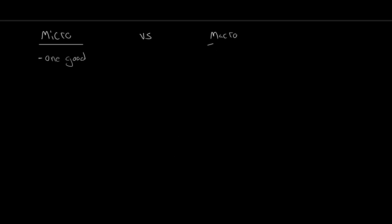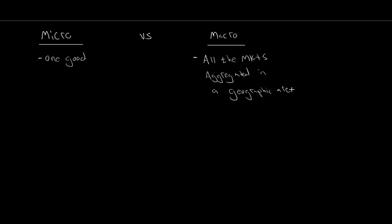Jumping over to macro — what's our distinction? For macro, what we are looking at is all the markets, aggregated in a geographic area. Typically, that geographic area is a nation state. We might be looking at the macroeconomic outcome in Canada, the U.S., Europe, China, India, and so on. We could even scale this down to the provincial or state level. But typically, macroeconomics is this aggregation of markets, of output — how much stuff we're able to produce and consume across a larger geographic area.